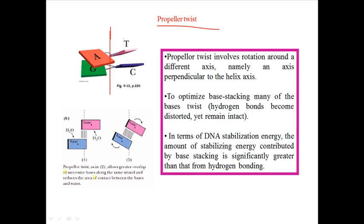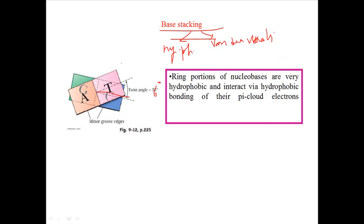The normal twist aligns the base pairs in such a way that they can form hydrogen bonds - to align the bases in such a way that they can form the hydrogen bonds.